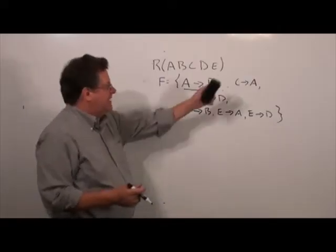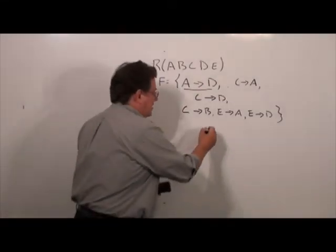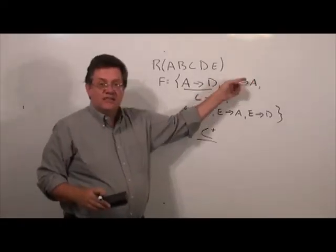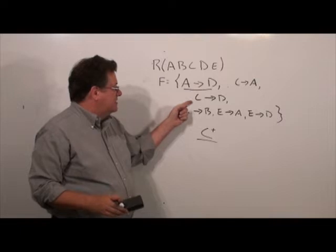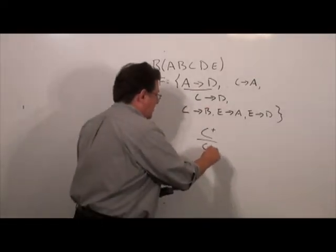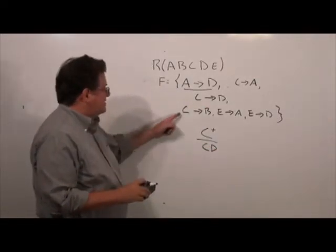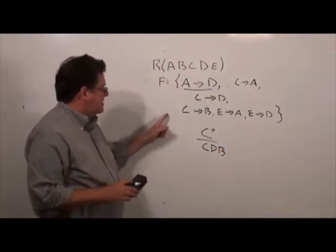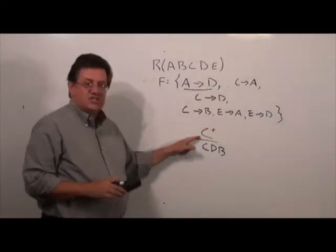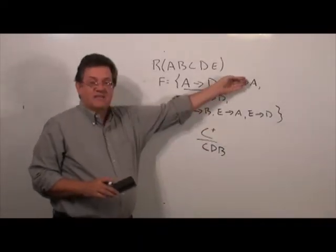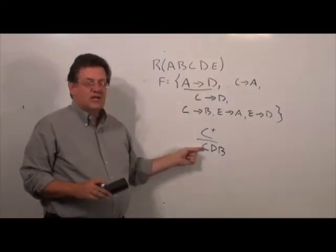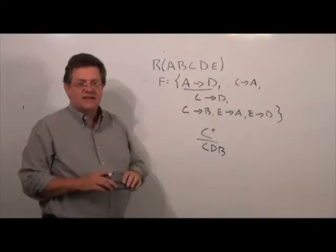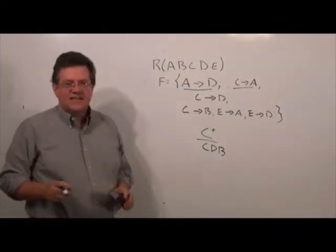Next, we check C → A. We compute C closure assuming C → A does not exist. C gives us D via C → D, but does it determine anything else? No. So C closure without C → A does not include A, meaning we need to keep this functional dependency.